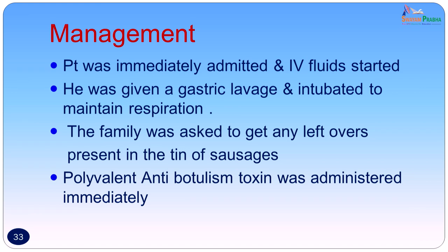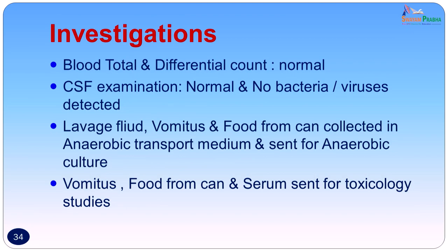The patient was admitted; IV fluids were started, gastric lavage was performed, and the patient was intubated to maintain respiration. The family was asked to bring any leftovers from the can of sausages for examination. A polyvalent anti-botulism toxin was administered immediately — the polyvalent antiserum available usually contains three types: type A, type B, and type E. Investigations were started: blood count — total and differential count were normal; CSF examination showed normal biochemistry and cytology with no cells, no bacteria, and no viruses detected. The lavage fluid, vomitus, and food from the can were collected in an anaerobic transport medium and sent for anaerobic culture. Vomitus and food from the can were also sent for toxicology studies to detect the toxin, since culture takes 8 days and toxicology studies give much earlier reports.